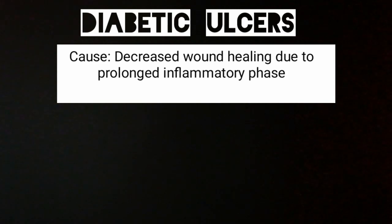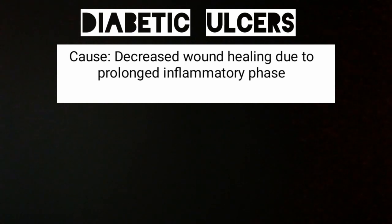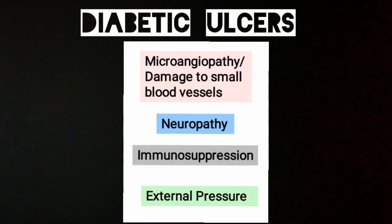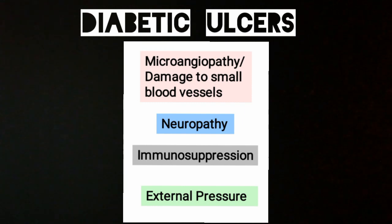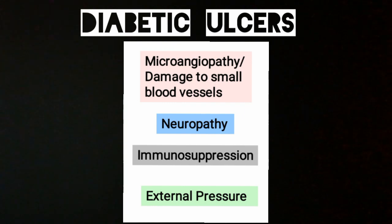Another type of chronic wound is the diabetic ulcer, which is caused by decreased wound healing due to a prolonged inflammatory phase. Diabetes is not only about blood sugar level — it is a multifactorial disease. The factors that cause ulcers include micro-angiopathy, which is damage to small blood vessels, and neuropathy, which is loss of sensation due to nerve damage. Because of neuropathy, the patient may sustain an injury and it will worsen without them noticing. Another factor is immunosuppression — already the patient has injury, and due to micro-angiopathy nutrients are not reaching the area. Immunosuppression also impairs immune cell-mediated healing. All these factors lead to ulcer formation.